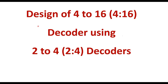In this video I will explain how to design a 4-to-16 decoder with the help of 2-to-4 decoders. A decoder is a device which has multiple inputs and multiple outputs. 4-to-16 means it has 4 inputs and 16 outputs. In general, a decoder has n inputs and 2^n outputs.